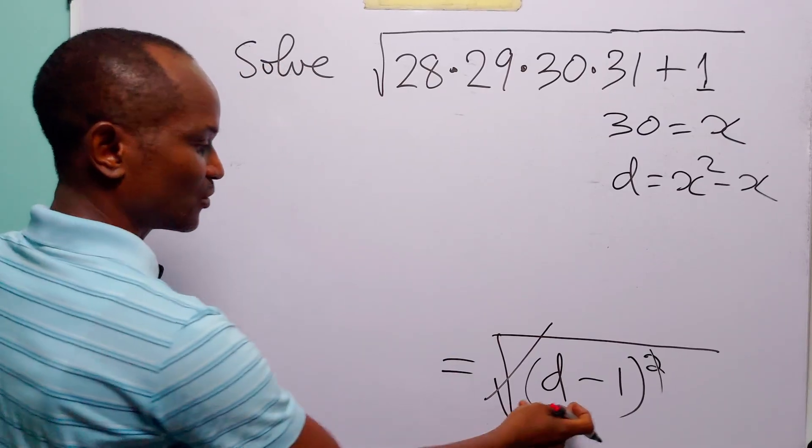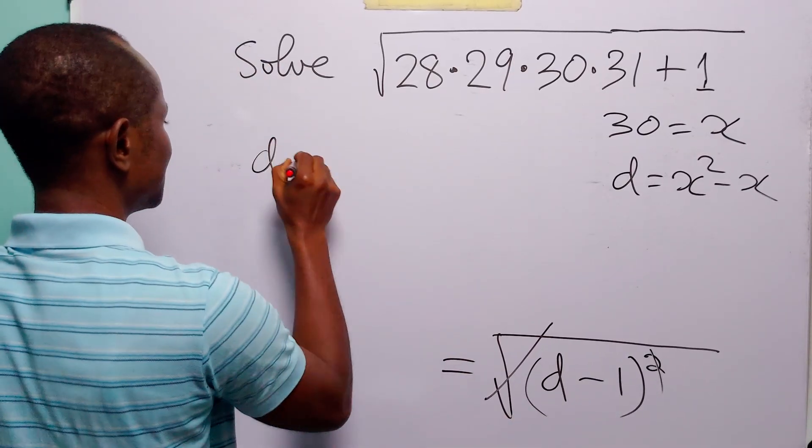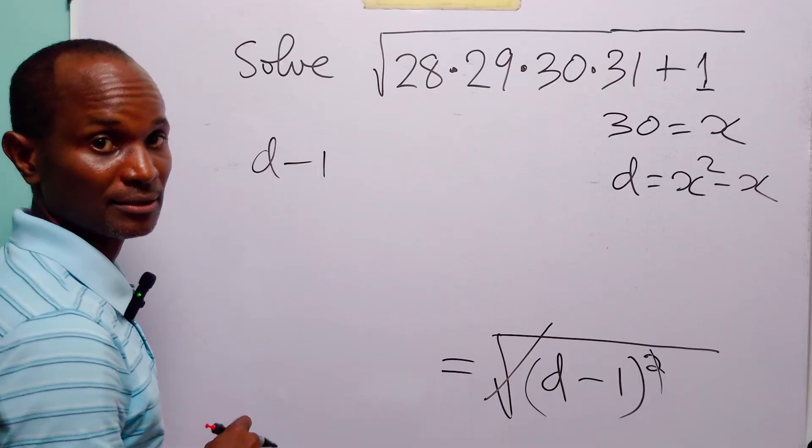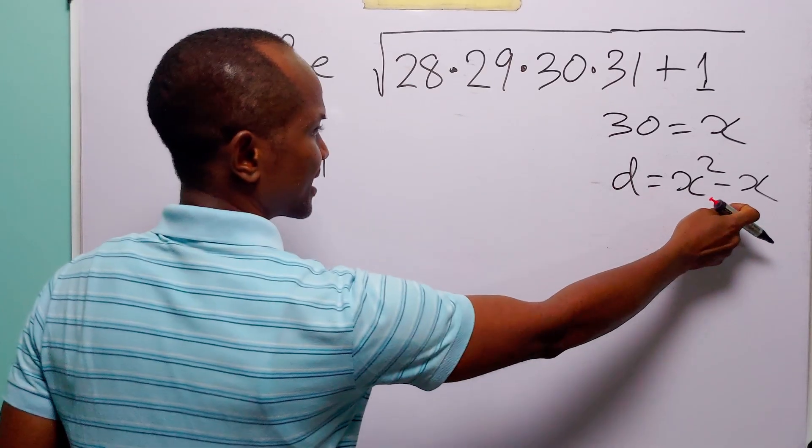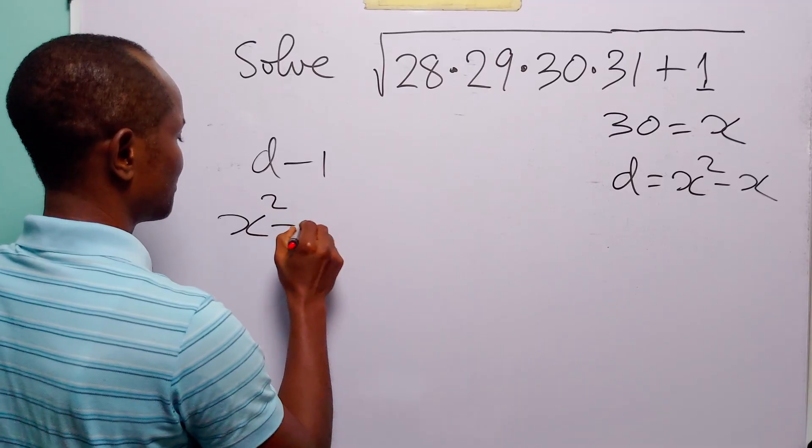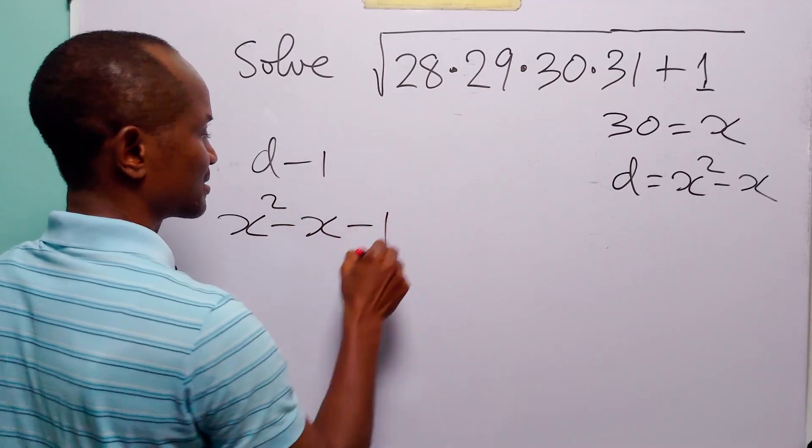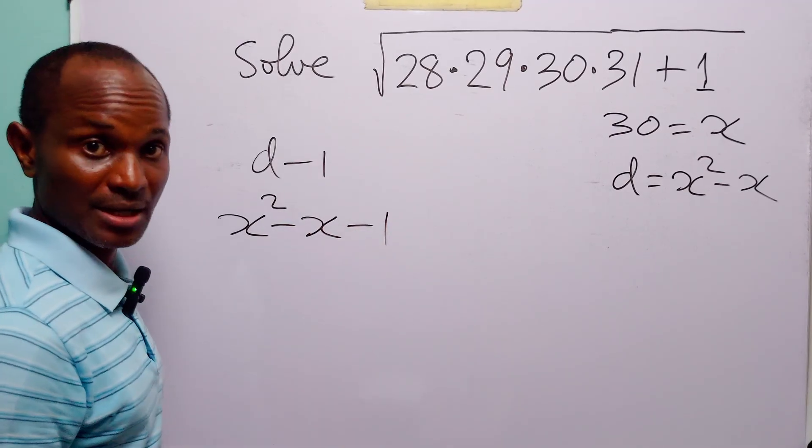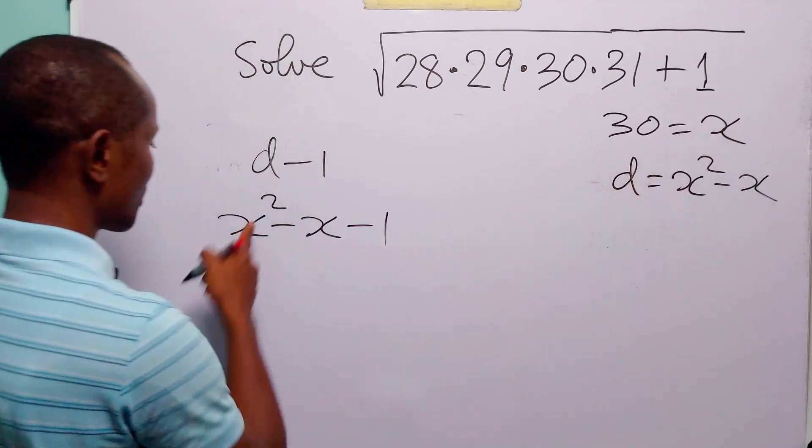The final answer will now be what? d minus 1. But of course we know that d is x squared minus x. So this is going to be x squared minus x. And of course we know that x is equal to 30.